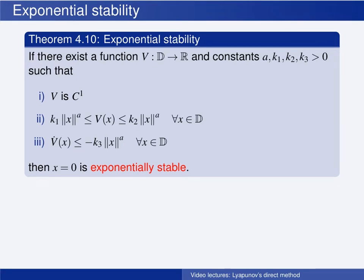Theorem 4.10 says that if there exists a Lyapunov function candidate defined on d, and there exist positive constants a, k1, k2, and k3, such that the following conditions are satisfied: v is continuously differentiable; v is greater than or equal to k1 times the norm of x raised to the constant a. The norm used can be any of the p-norms, but we usually use the Euclidean norm. And v is less than or equal to k2 times the norm of x raised to the same constant a, for all x in the domain d.